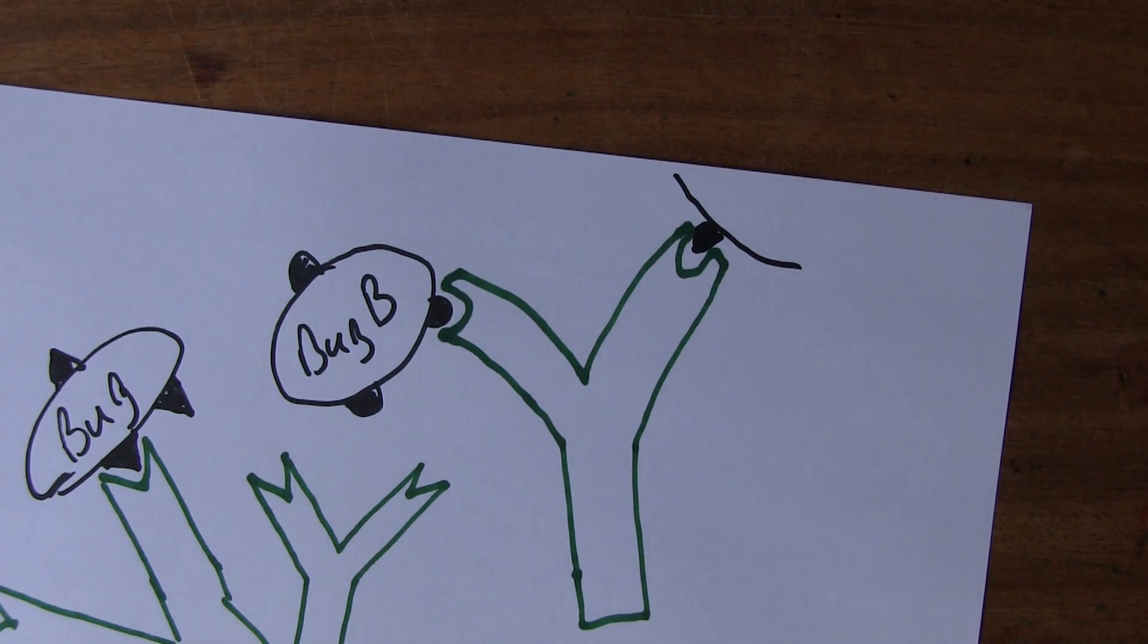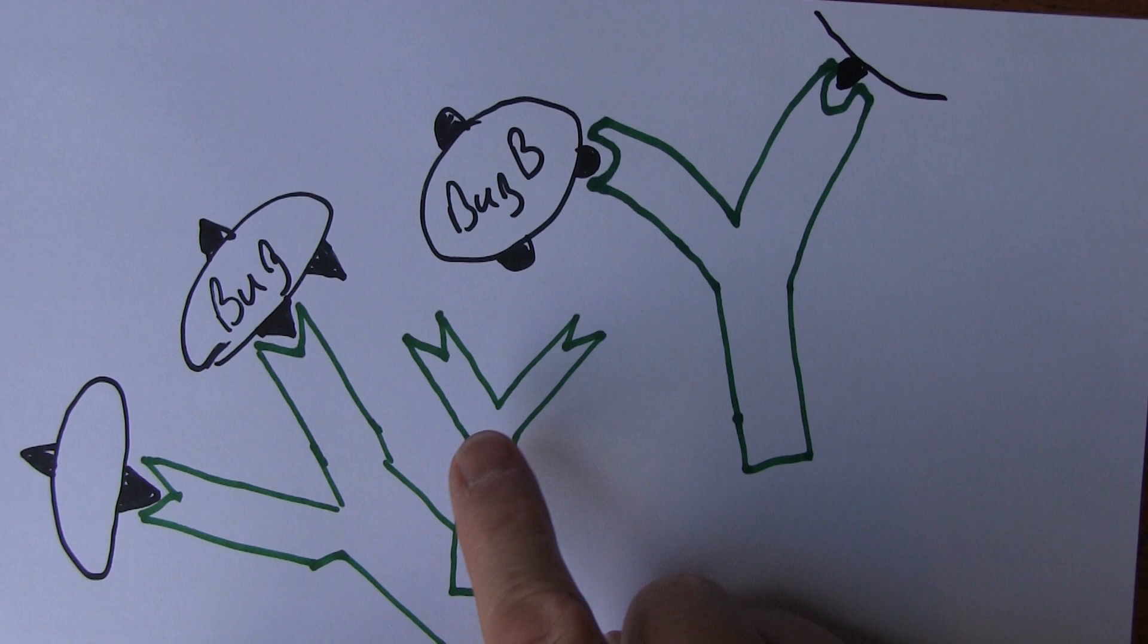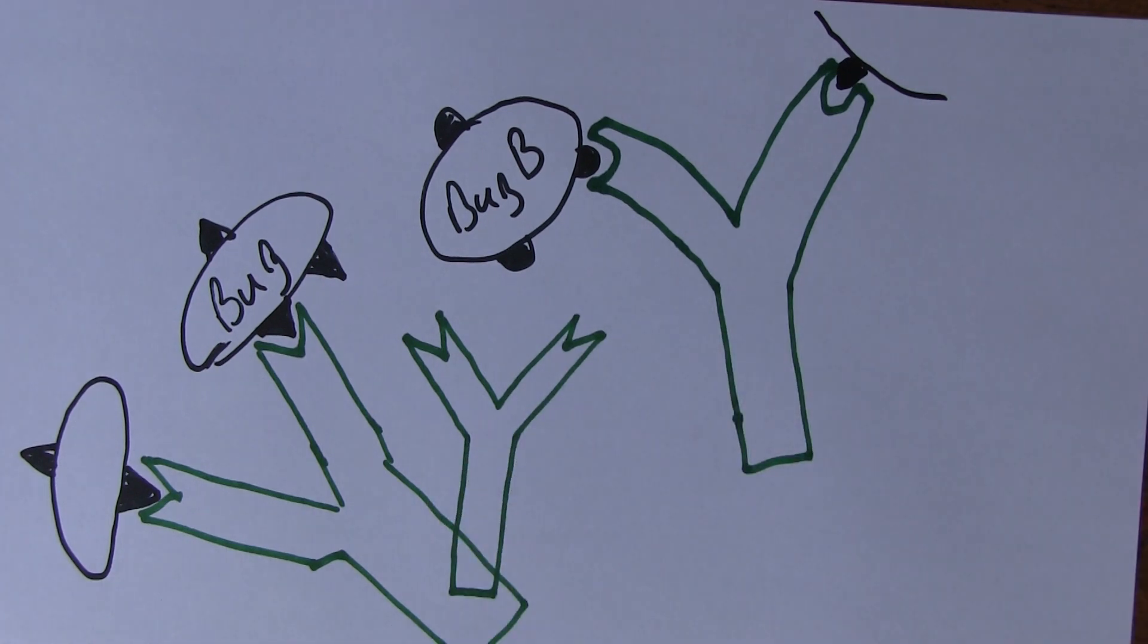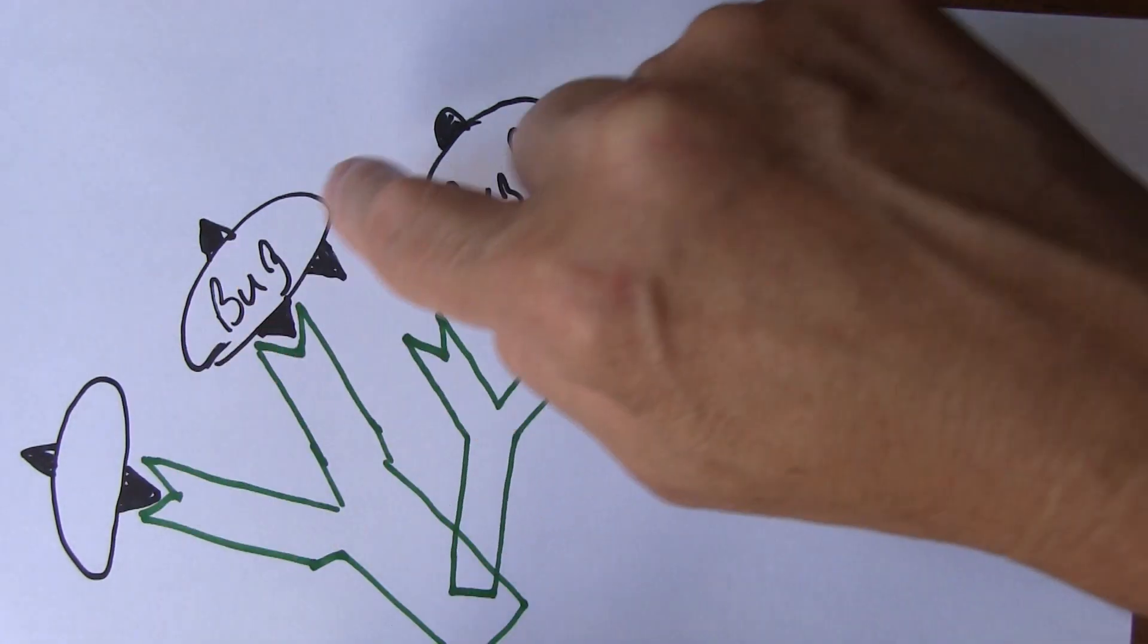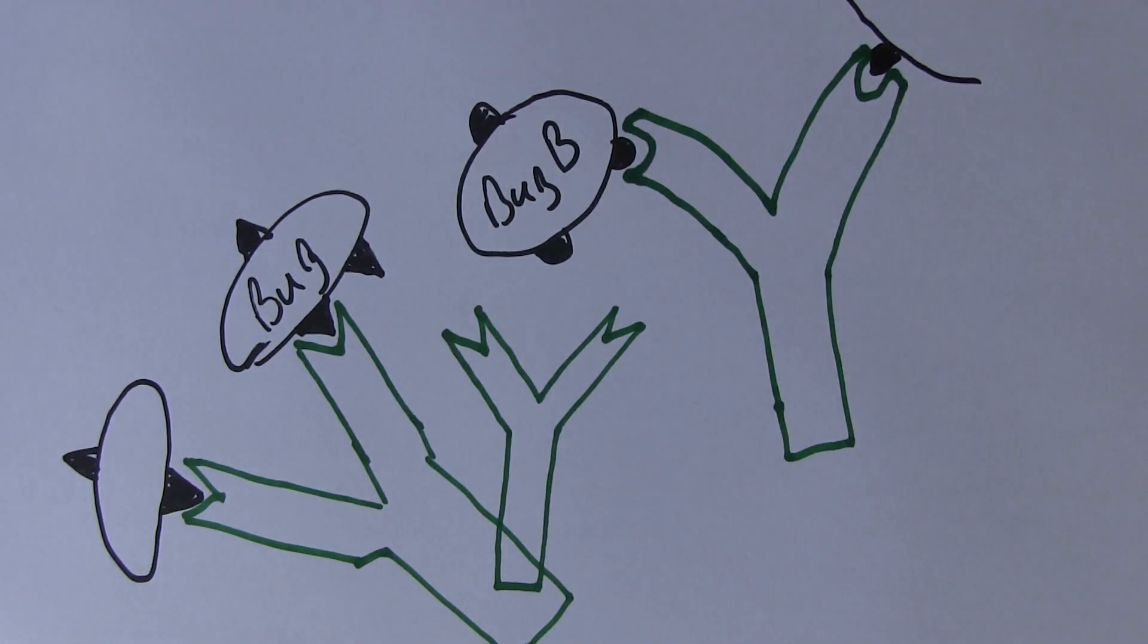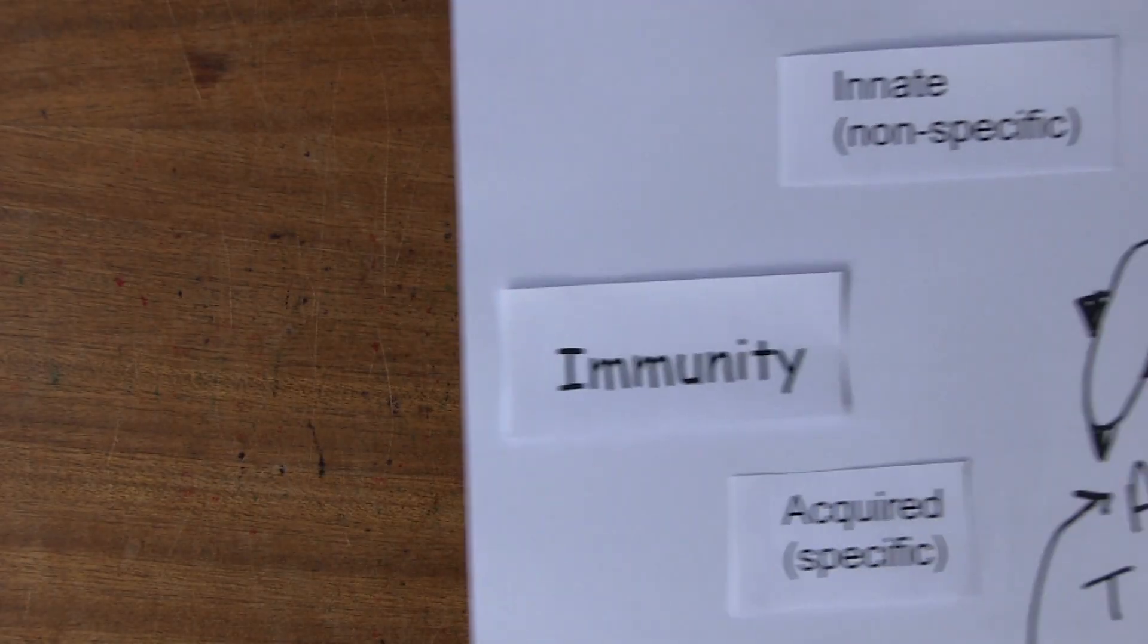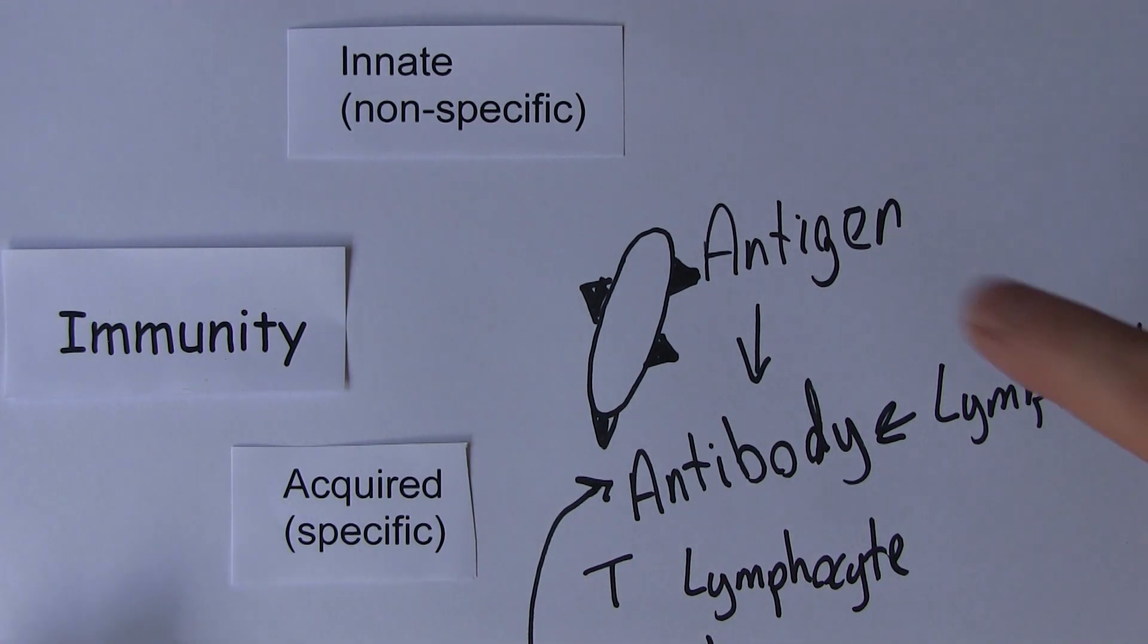But the point is, the reason that this is specific is that the immune system has to make specific antibodies that combat specific antigens. It's a specific nature of immunity. And that is, in essence, what happens in acquired immunity.